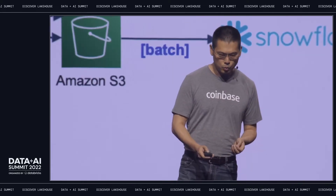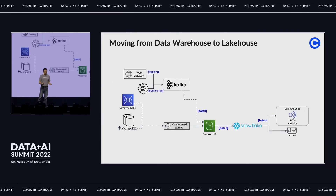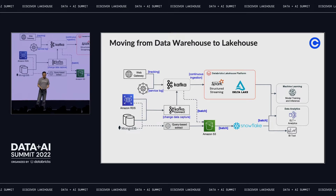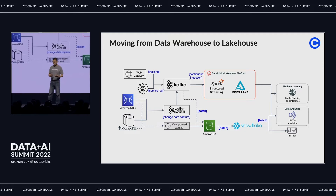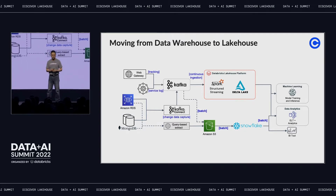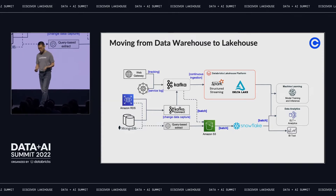Let me walk you through the history of our architecture. Coinbase started with Redshift. Around 2019, we switched to Snowflake, and at that time we primarily had daily batch processing with very few hourly jobs for critical tables. This is where we introduced Databricks into the landscape. We have Kafka with all the change data capture and we can leverage continuous ingestion on top of Delta Lake with structured streaming.